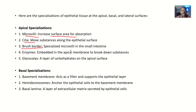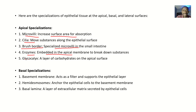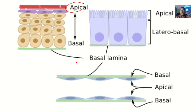Then we have the brush border — these are specialized microvilli that can be found in the small intestine. Then we have enzymes, which are embedded in the apical membrane and help to break down substances. Then we have the glycocalyx, which is a layer of carbohydrates on the apical surface. So all these are how the cell has evolved to develop its top layer for absorption.